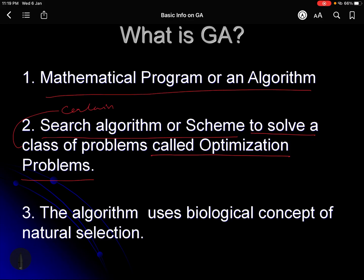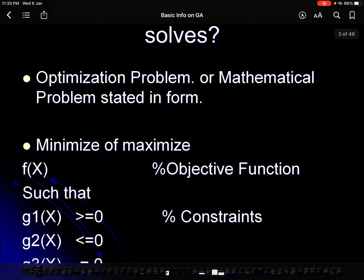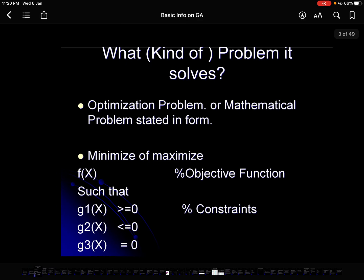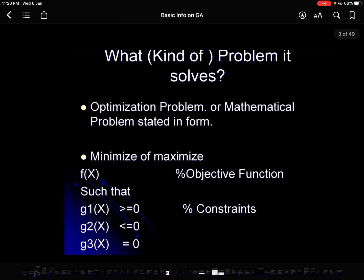The third important thing about GA is the scheme which is developed — this algorithm uses the biological concept of natural selection. That is why the name 'genetic algorithm' comes from there; it is based on a biological concept of natural selection.